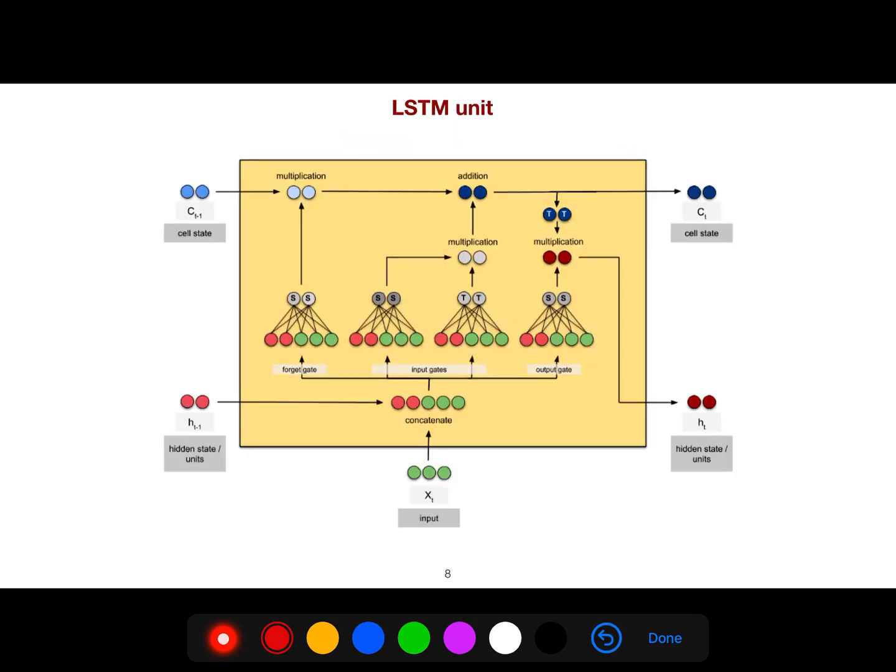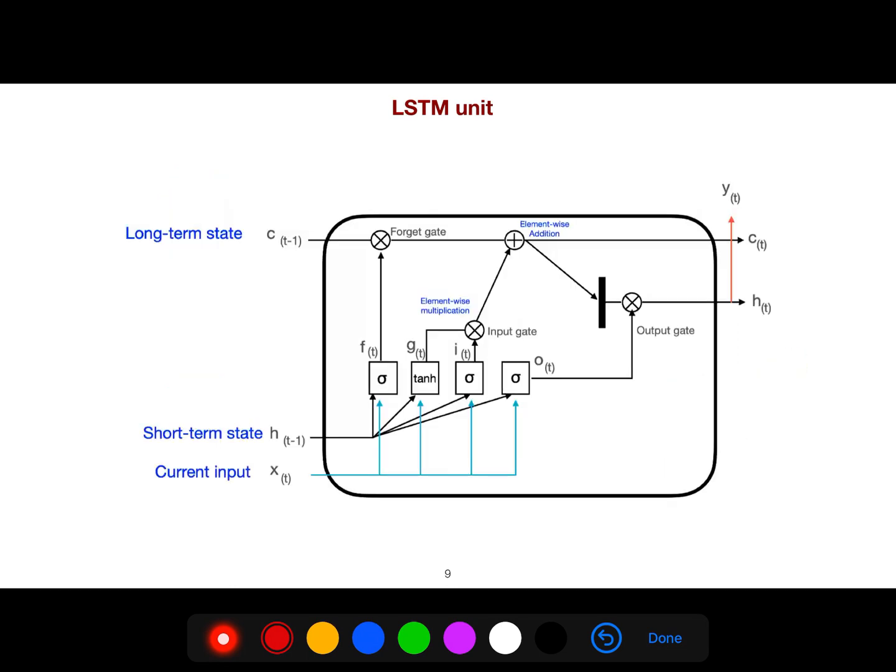This is the architecture of the LSTM unit. These cells, cell states, are for long dependencies, for example connecting different words in a very long sentence. But in hidden states, these represent very short things - tokens in a sentence that are very close to each other. The LSTM unit has a long-term state, short-term state, and it has a current input and we have an output.